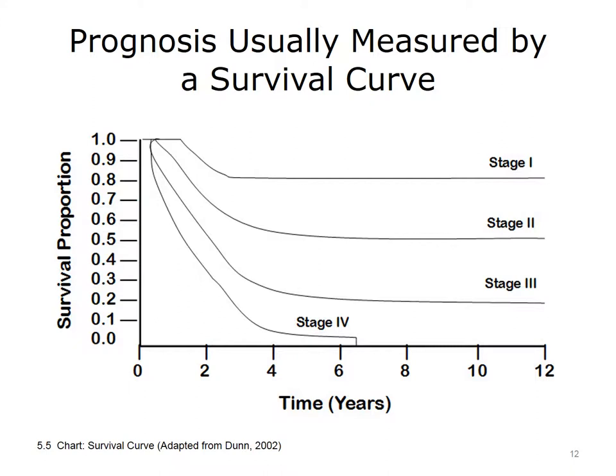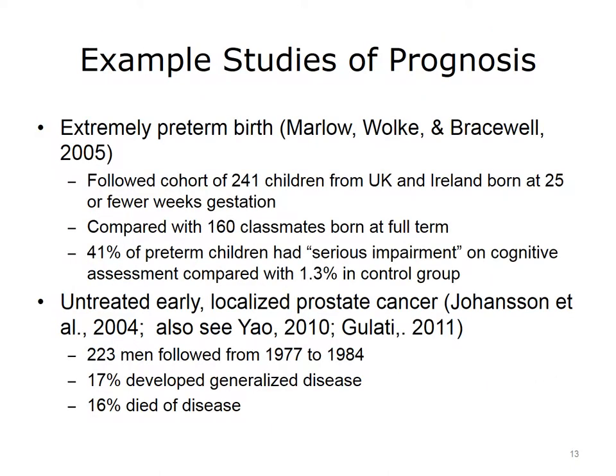The most common way we measure prognosis is with a survival curve. This slide shows a survival curve from one type of cancer when diagnosed at different stages. The later the stage of the cancer, the worse the prognosis. Patients who have stage 1 of this particular cancer have a good prognosis, but those who have stage 4 are likely to die within 7 years.